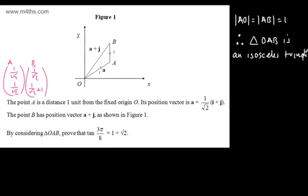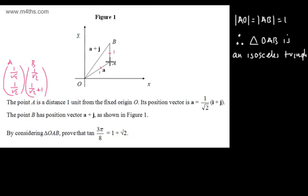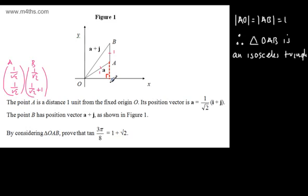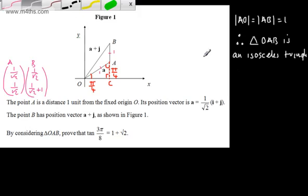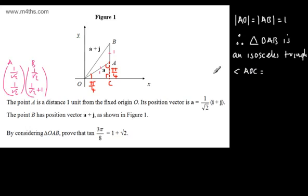Let's consider some more information. I'm going to define a point C on the x-axis by dropping down a perpendicular from A, giving a right angle there. If A is in the direction of I plus J, we've got a π/4 angle at A, and with the right angle, π/4 here as well. We can state that angle AOC equals angle OAC, which equals π/4.